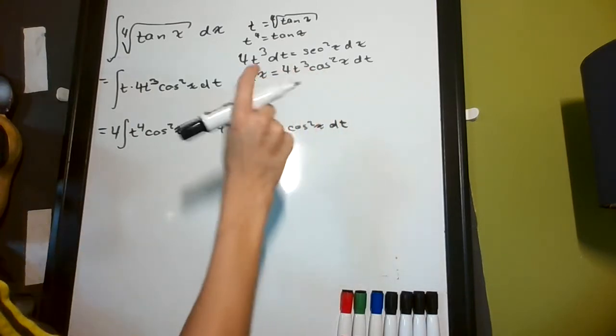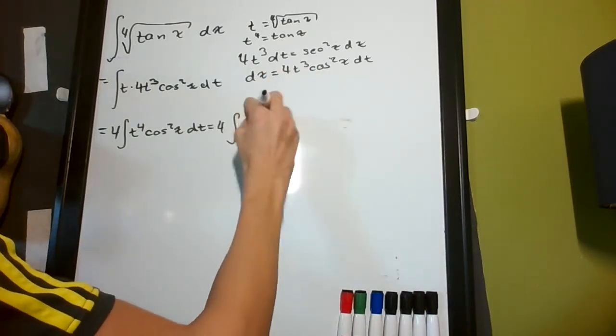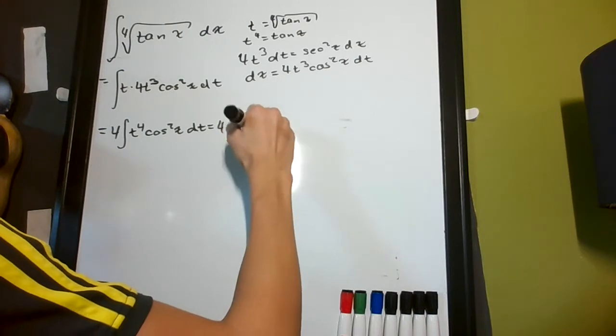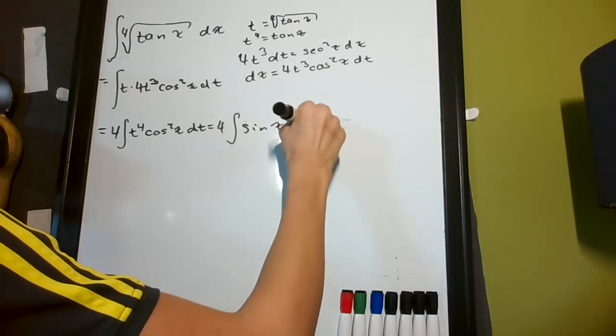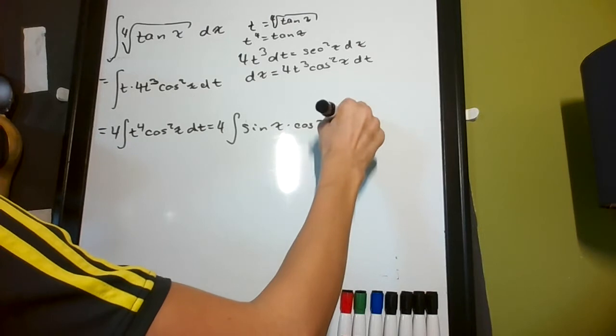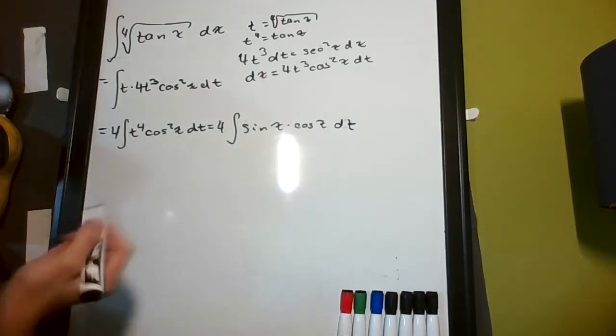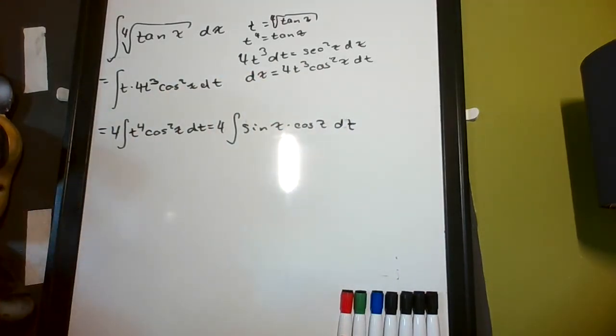I get that this is just equal to 4 times the integral of sine of x times cosine x dt, not in respect to x, but that doesn't matter.